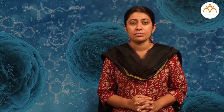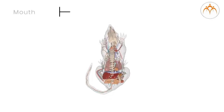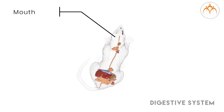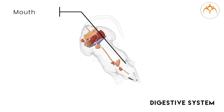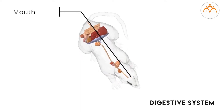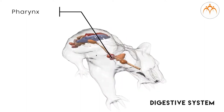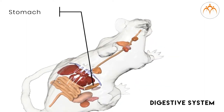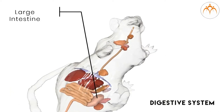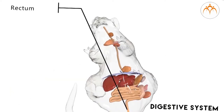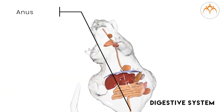I will also tell you how it is different from the human digestive system. The digestive system begins with the mouth. The other important organs of the digestive system are pharynx, esophagus, stomach, small intestine, large intestine, rectum, and anus.